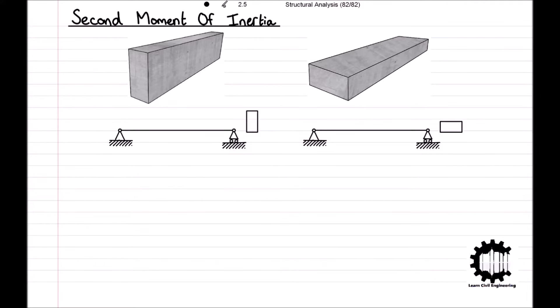Now, if we were to apply an equal load to each beam halfway along the spans, the beams would deform like so. Even though the areas and the centroid of the two beams are the same, the beam on the left will deform less than the beam on the right, or you could say that the beam on the left can take more load before breaking than the beam on the right. We have just stated that this difference is not due to the areas or the locations of the centroids of the beams, so it is most likely as a result of the second moment of inertia.